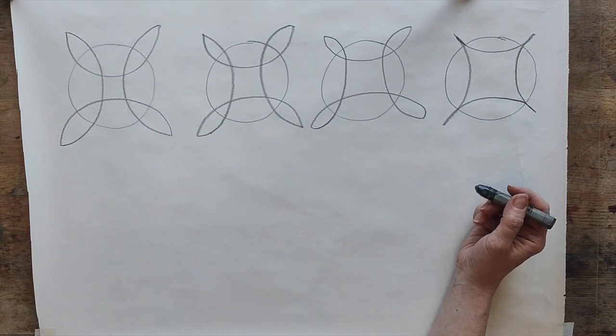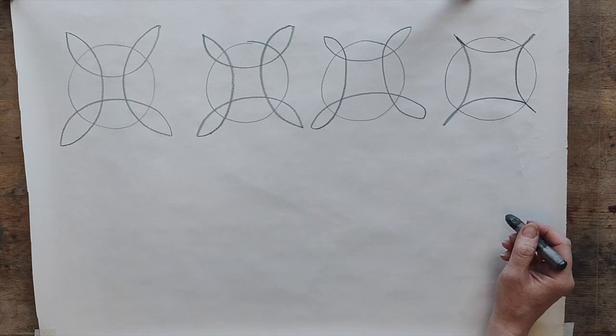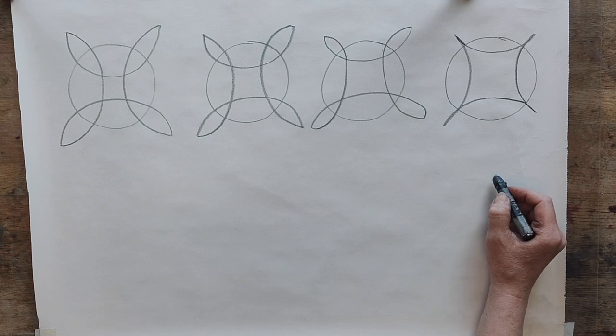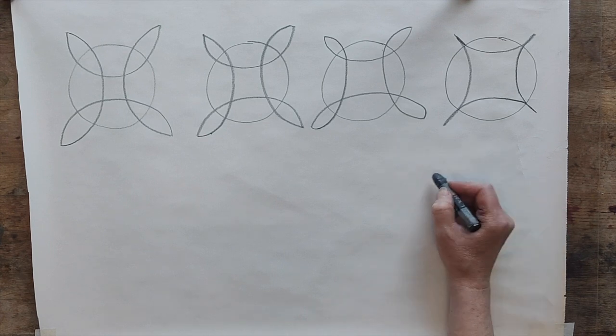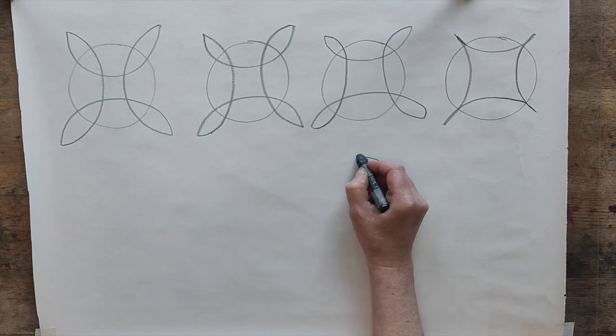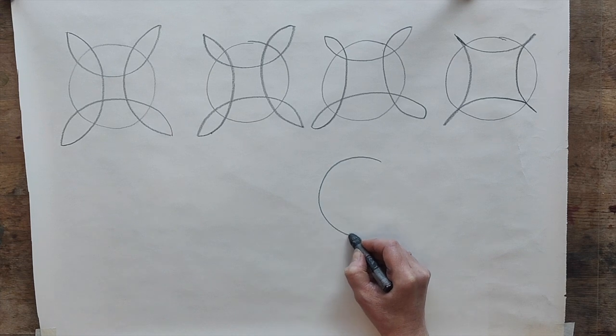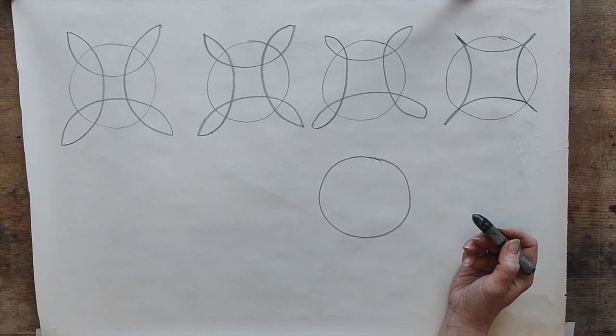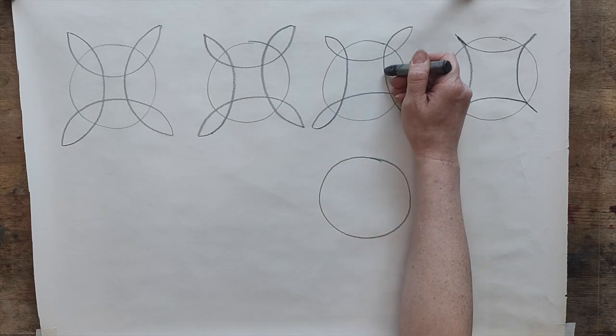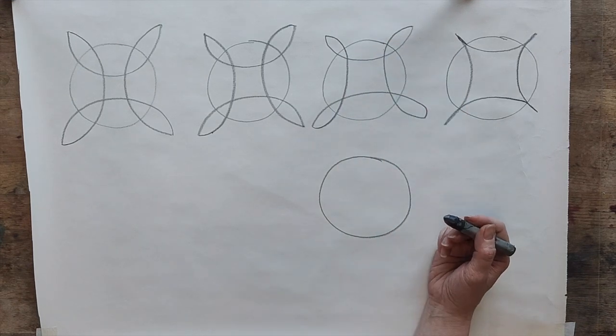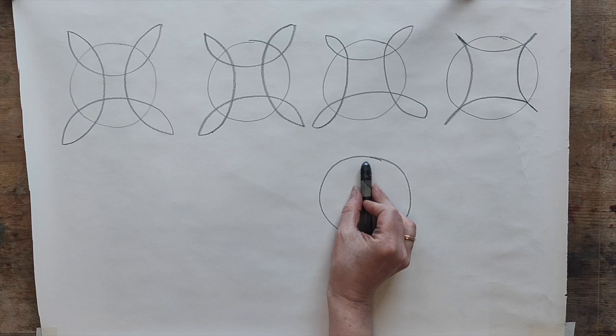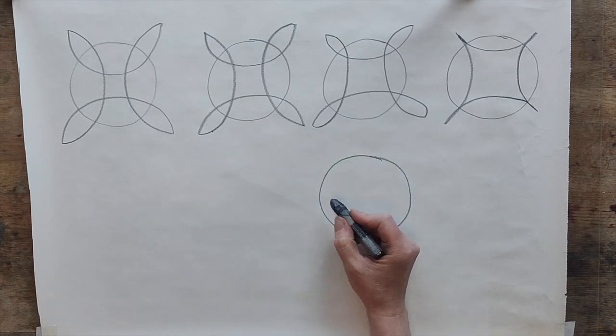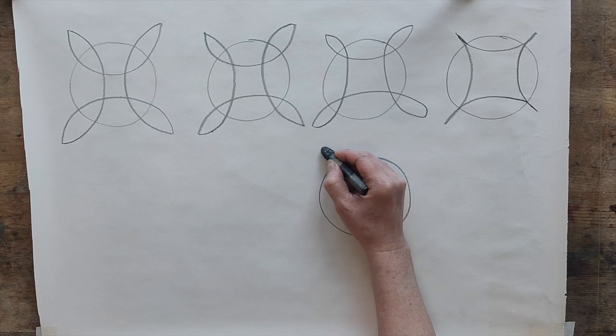So the next shape that I want to show you, here you have a circle and what we want to do is now play with the shape of the central square. So we want to make it a long vertical one, and how do we do that? In order to do that...